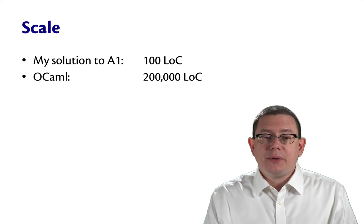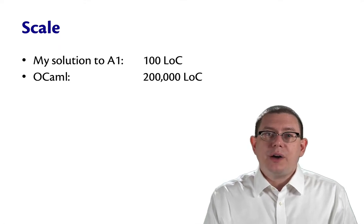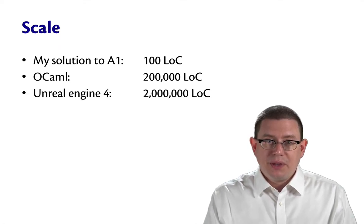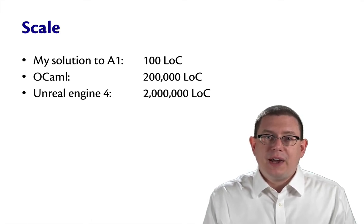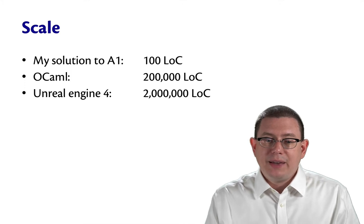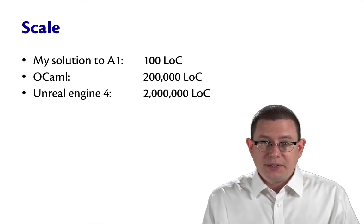The OCaml compiler itself is somewhere around 200,000 lines of code. Unreal Engine 4, the game engine behind games like Fortnite and Final Fantasy VII Remake, is over 2 million lines of code.